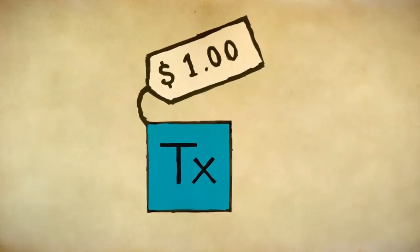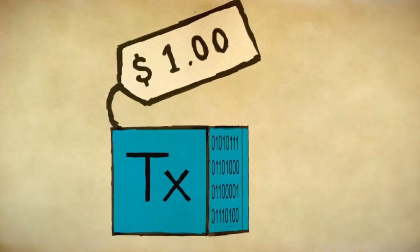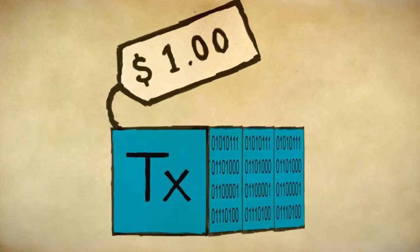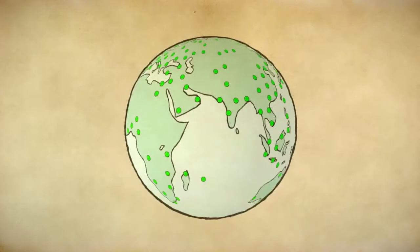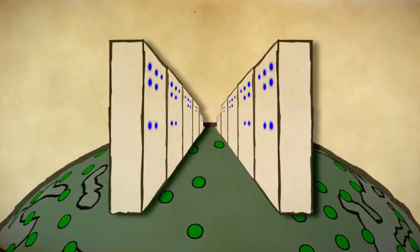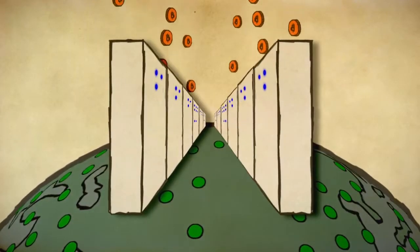The easy thing to do is just have everyone change their software to accept bigger blocks all at once. Fees would go down, but you will need an expensive data center to run a node, and you won't be able to do it anonymously.